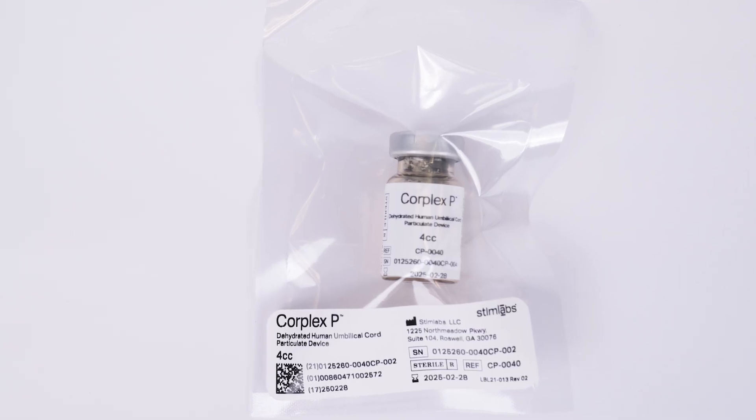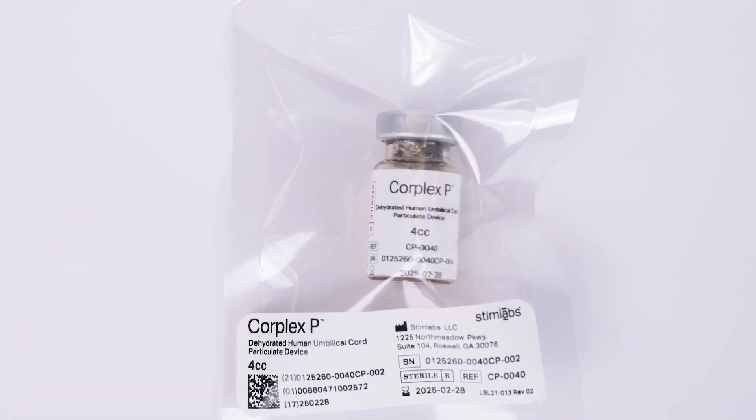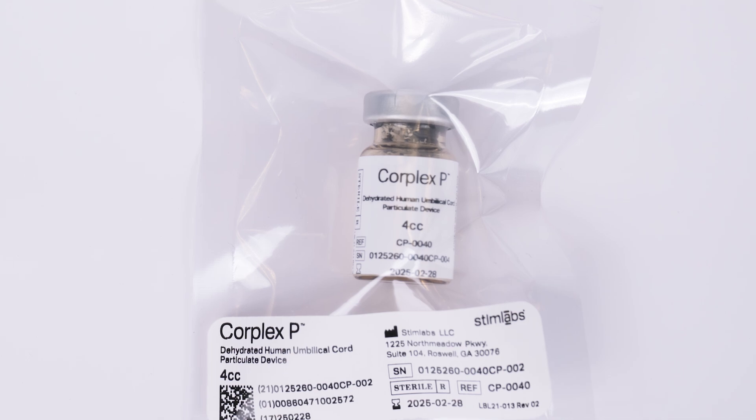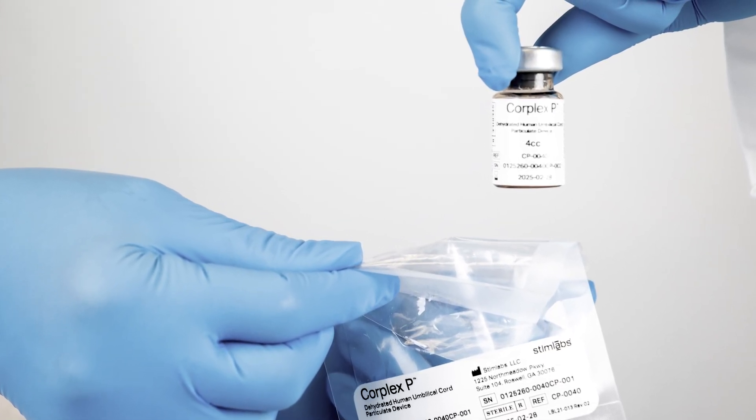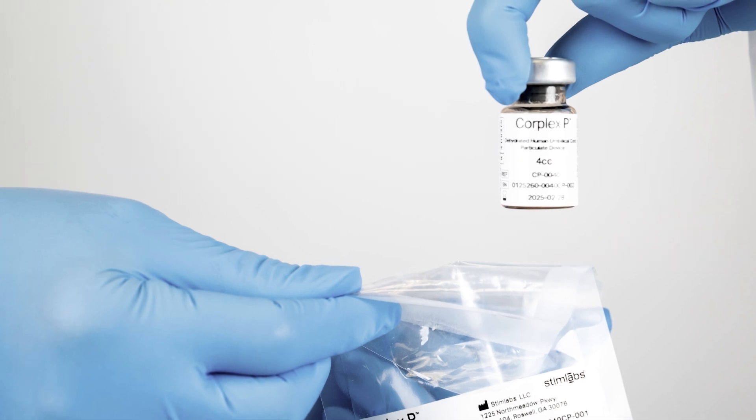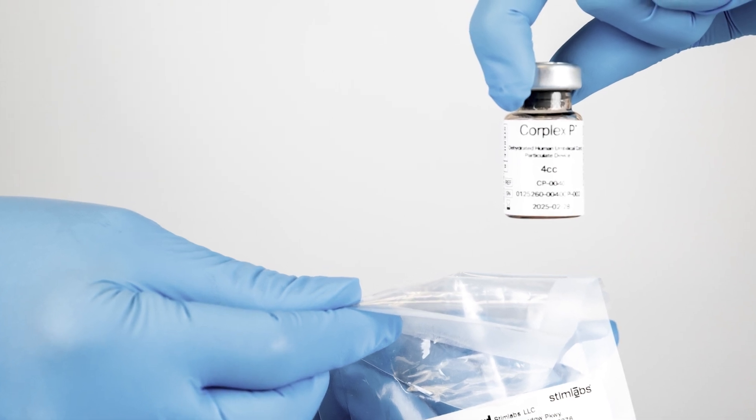The sterile barrier system consists of a clear pouch that contains the vial and the vial contents, which are provided sterile. The product vial alone is not qualified as a sterile barrier. Once the vial has been removed from the sterile pouch, CorPlex-P should either be used or discarded.